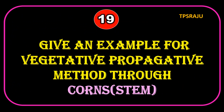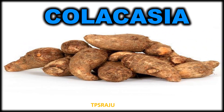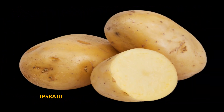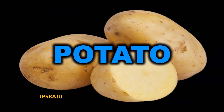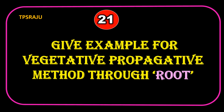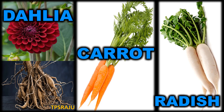Give an example for vegetative propagation method through corms. Colocasia. Give an example for vegetative propagation method through tuber. Potato. Give an example for vegetative propagation method through roots. Dahlia, carrot, radish, etc.